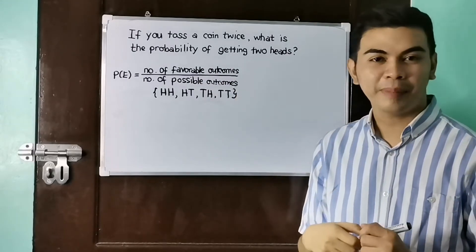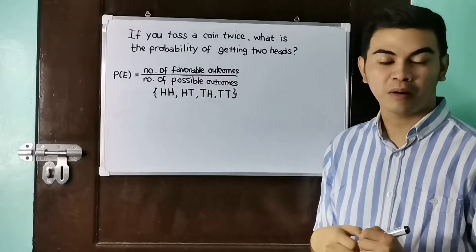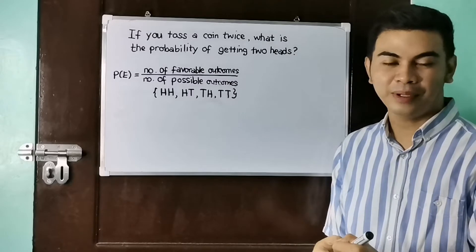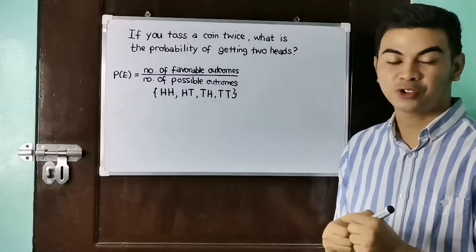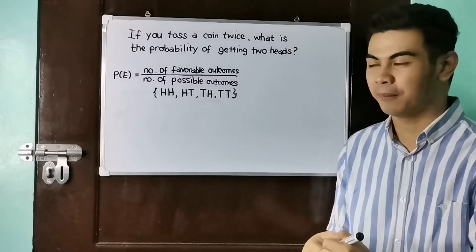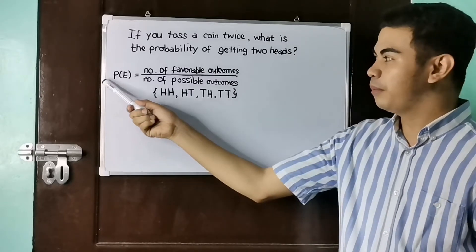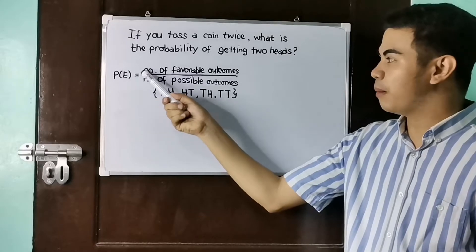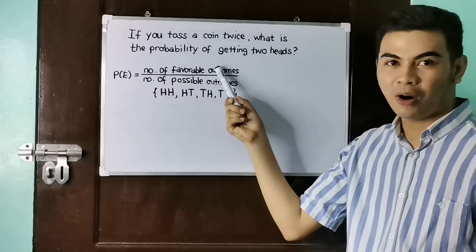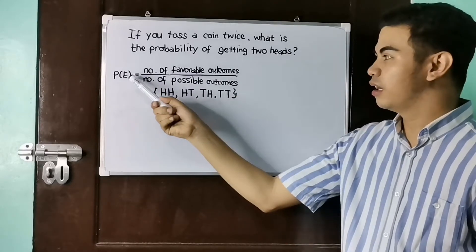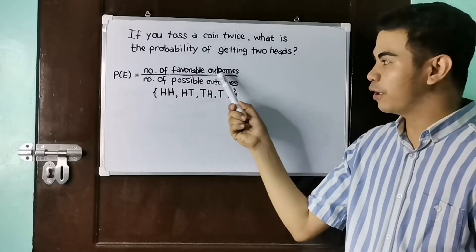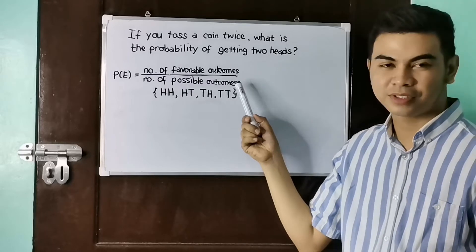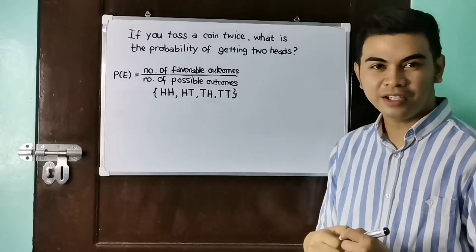This topic is all about probability of an event. And we need to remember this formula for us to answer the problem. Probability of an event is equal to the number of favorable outcomes over the number of possible outcomes.